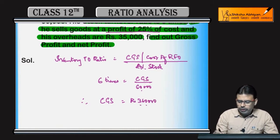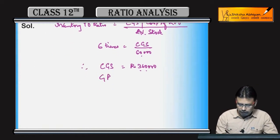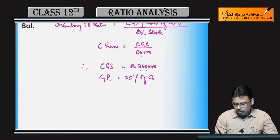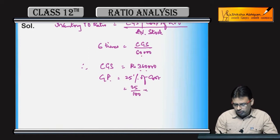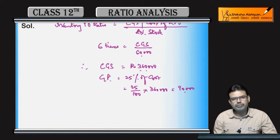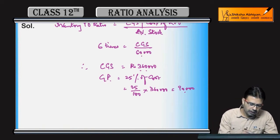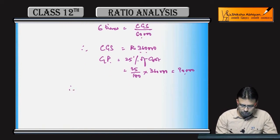Now, gross profit is 25% of cost. So gross profit is 25% of Rs. 3,60,000, which equals Rs. 90,000. So gross profit is Rs. 90,000.